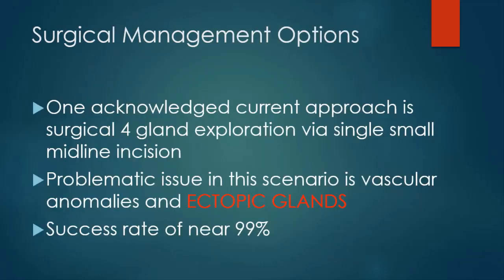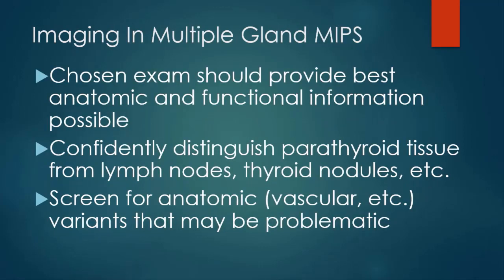Surgical management options have changed again. One current approach is four-gland exploration for every patient via a single small midline incision. The problematic issue is encountering a vascular anomaly or not finding parathyroid tissue in the standard location. Ectopic tissue is a problematic issue. Imaging in multiple-gland MIPS: the chosen examination should provide the best anatomic and functional information to identify parathyroid tissue and distinguish it from anything else, and should screen for anatomic variants. I think 4D CT and developing 4D MR techniques are probably our best bet.